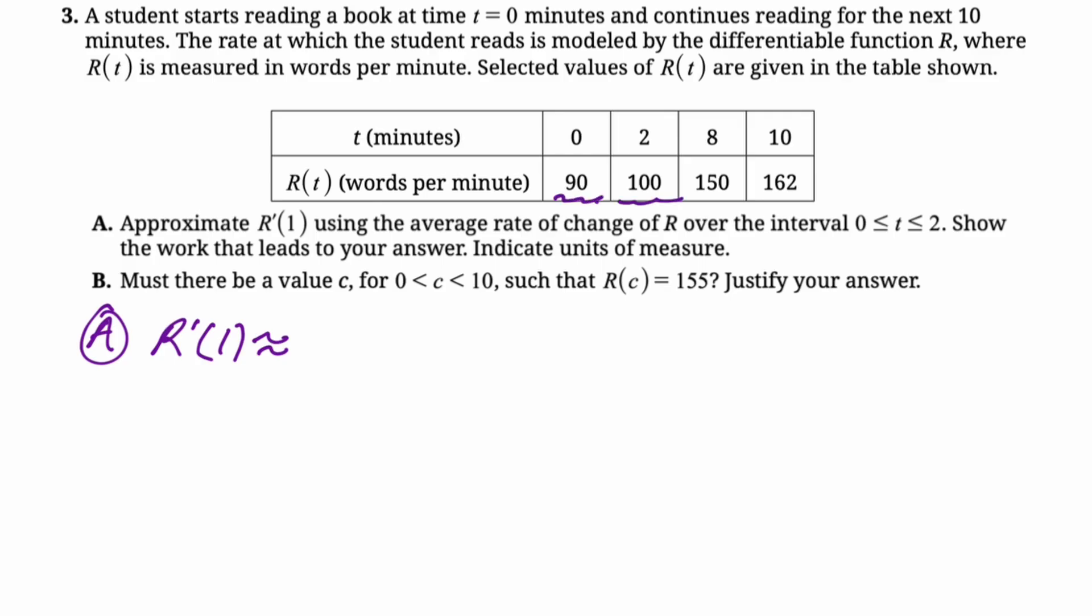We're going to use these values. I'm going to set it up by saying it's r of two minus r of zero over two minus zero. Then we go to the table and we pull the values. So it's going to be 100 minus 90 over two, which you can actually stop there and then just put units on it. But I'm going to keep going because it doesn't look too risky here. That's 10 divided by two is five.